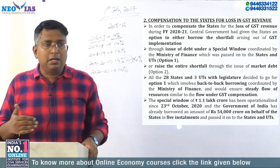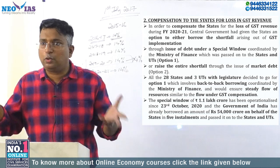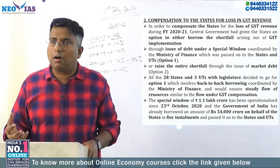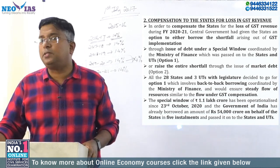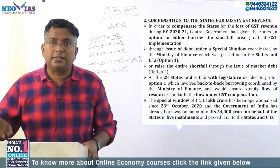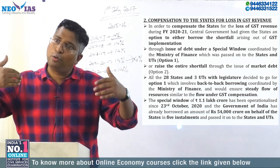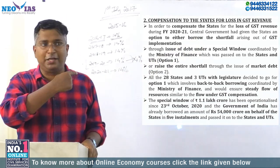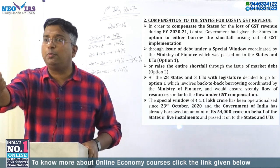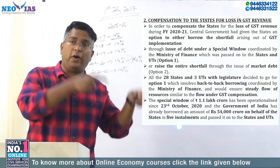When the central government borrows, the rate of interest is lower because the central government's revenue is better. When the state directly borrows from the market — through what is called a State Development Loan — the interest rate will be higher than central borrowing. In option two, the center says you directly borrow from the market. This is in addition to the 2% additional borrowing already discussed as the first measure. You can borrow for the GST compensation shortfall, but you borrow directly from the market — there is no support from the center — and we will pay you the principal amount and you have to pay the interest.